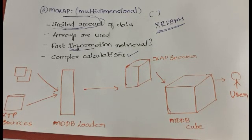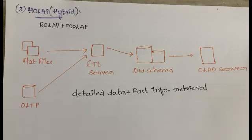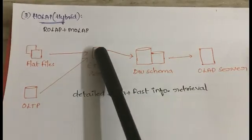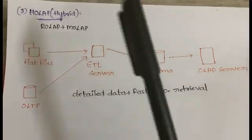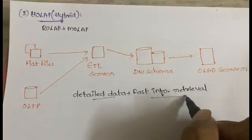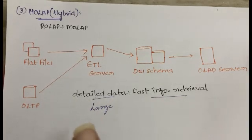After MOLAP, the last type is HOLAP — Hybrid OLAP — which is a combination of both ROLAP and MOLAP. In HOLAP, flat files and OLTP sources are combined and data is sent into the ETL server, from there to the data warehouse schema, and from there to the OLAP server. HOLAP has the added advantages of both ROLAP and MOLAP: it has detailed, large-scale data and also fast information retrieval.